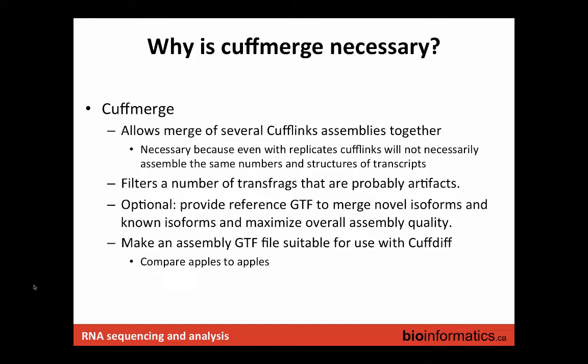CuffMerge basically takes all of your CuffLinks assemblies across all your different samples and creates a single consistent assembly. It's almost like another approach would be to create one giant pool of all your RNA data and use that to try to get an understanding of all the transcripts present. Usually you run CuffLinks on each sample, get a predicted assembly of transcripts from each, and then merge them together to make one consistent representation of the transcriptome across your pool of samples.